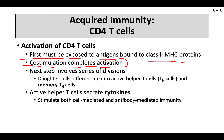Once activation occurs, the T cells rapidly divide, going through that clonal expansion process similar to the CD8 cells. During the expansion process, these cells differentiate into active helper T cells or memory cells. These are a different type of T memory cells, but they are very critical memory cells.